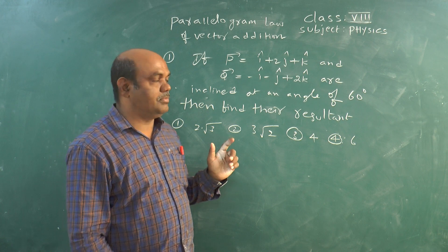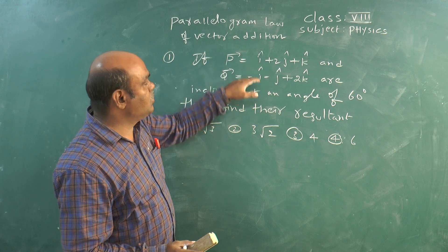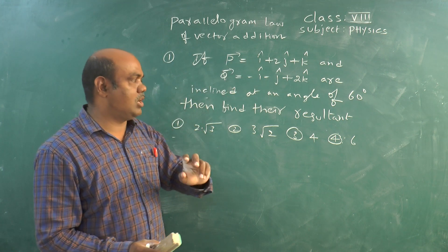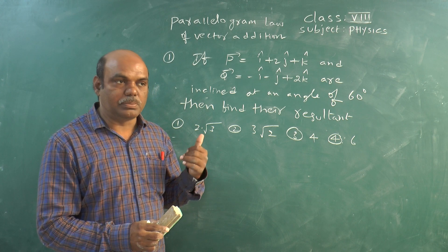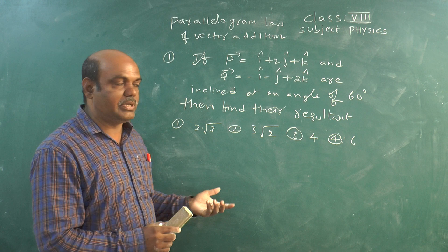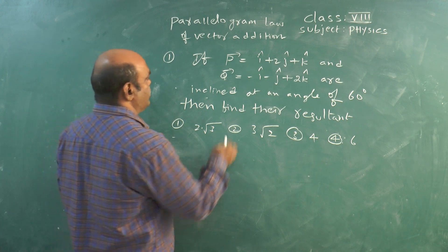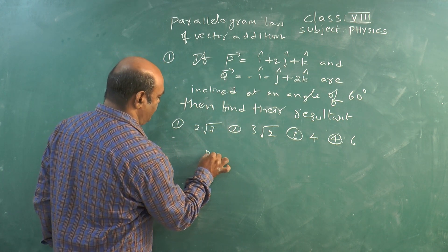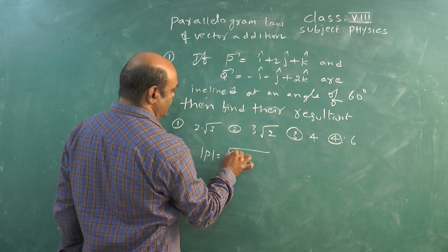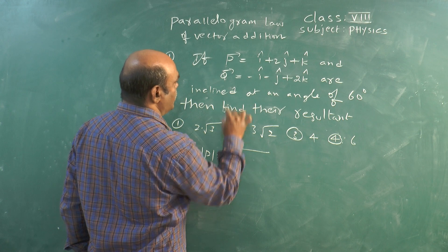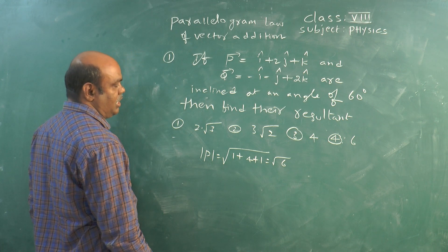For solving this problem, we must know the magnitudes of the two given vectors, because according to the Parallelogram Law formula, P and Q are the magnitudes. So first we find the magnitude of P vector: 1 squared plus 2 squared plus 1 squared equals 1 plus 4 plus 1, so root 6. The magnitude of Q: minus 1 whole squared plus minus 1 whole squared plus 2 squared equals 1 plus 1 plus 4, so root 6. Therefore P bar magnitude is root 6 and Q bar magnitude is root 6.